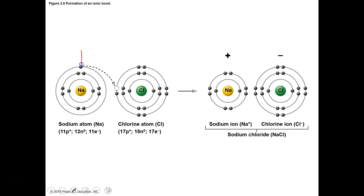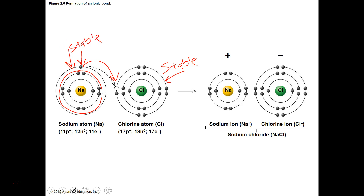The donation between sodium and chloride stabilizes both outer shells. Because sodium gave up an electron it becomes positive; chloride gains one and becomes negative. The attraction between the two keeps them in close proximity, and if we remove any liquid solution around them, they'll actually come together to form sodium chloride. If we add water, they'll disassociate from each other but stay in close proximity — which is what happens when you dissolve salt in water.